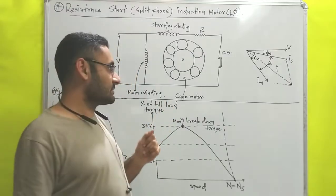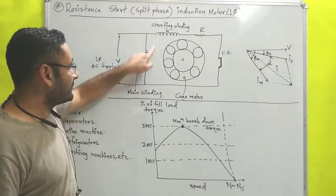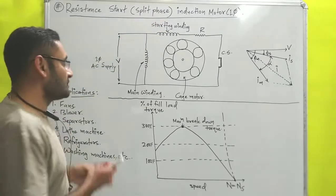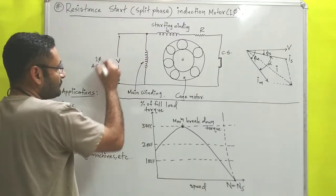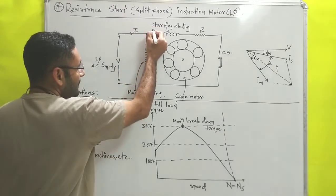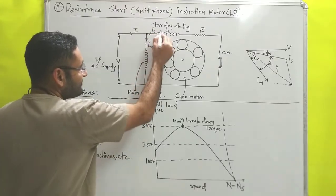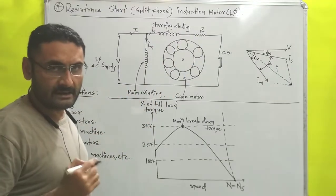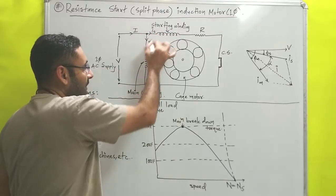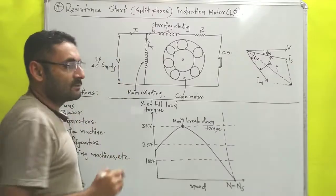Now we will move on with the construction. It has basically two windings: the first winding is known as the main winding and the other is known as the starting winding. Both of these windings are connected in parallel with each other. From this supply, if current I flows, at this junction I S current will go into the starting winding branch and I M current will flow in the main winding branch. Both windings are connected across the single phase AC supply.